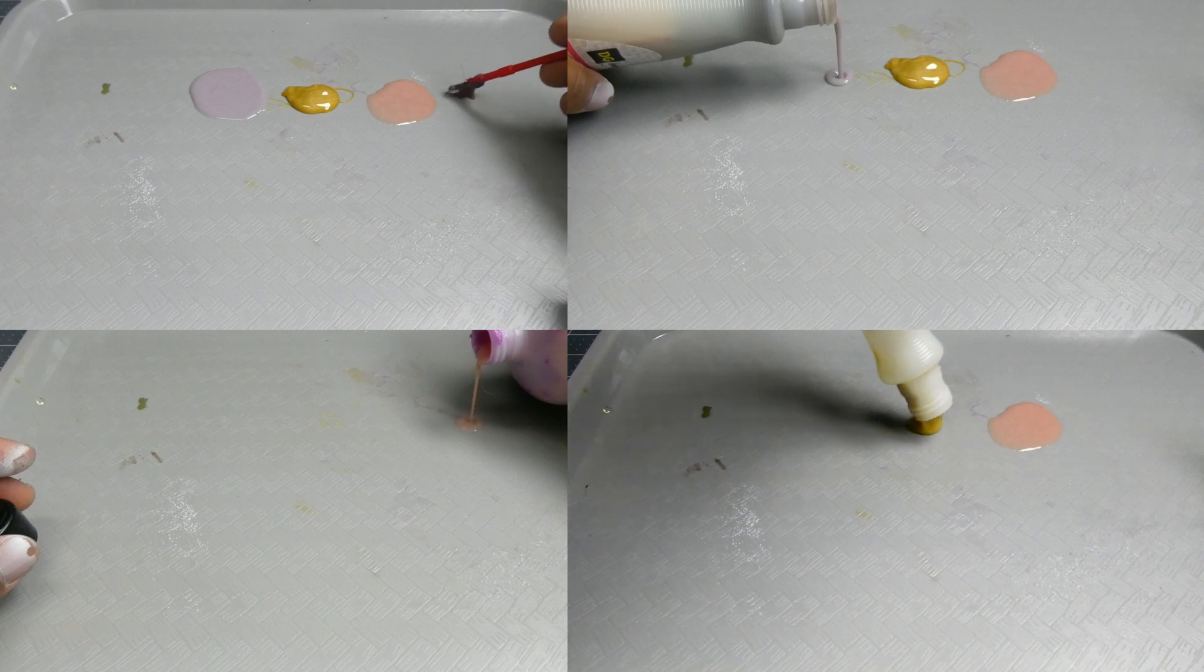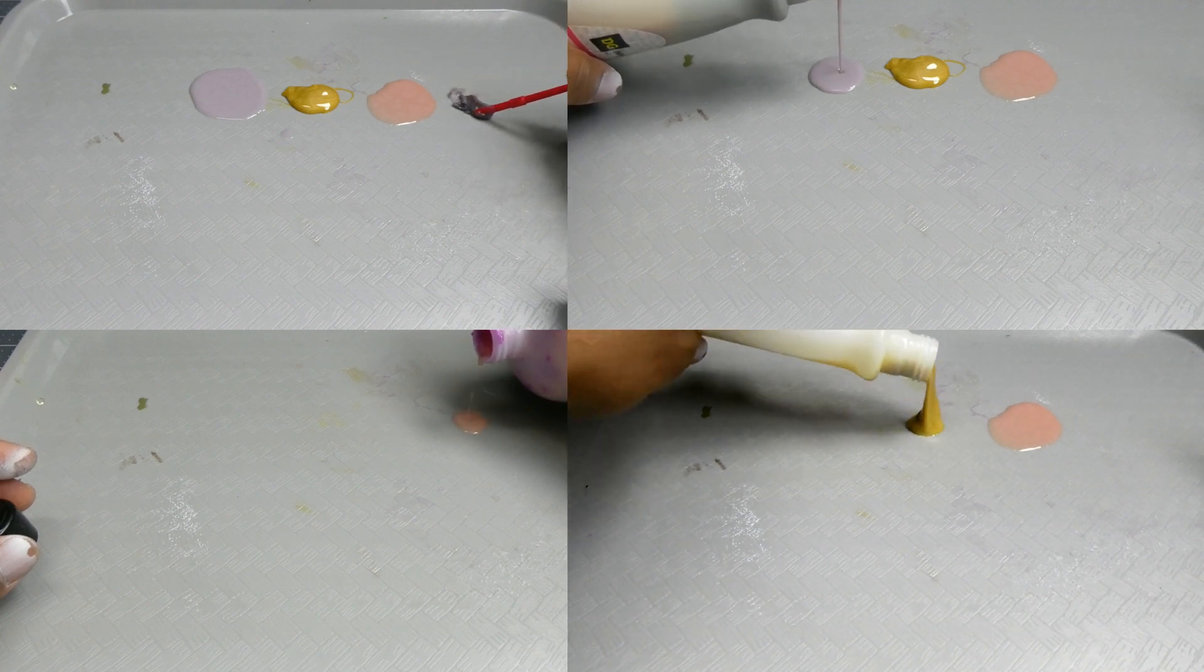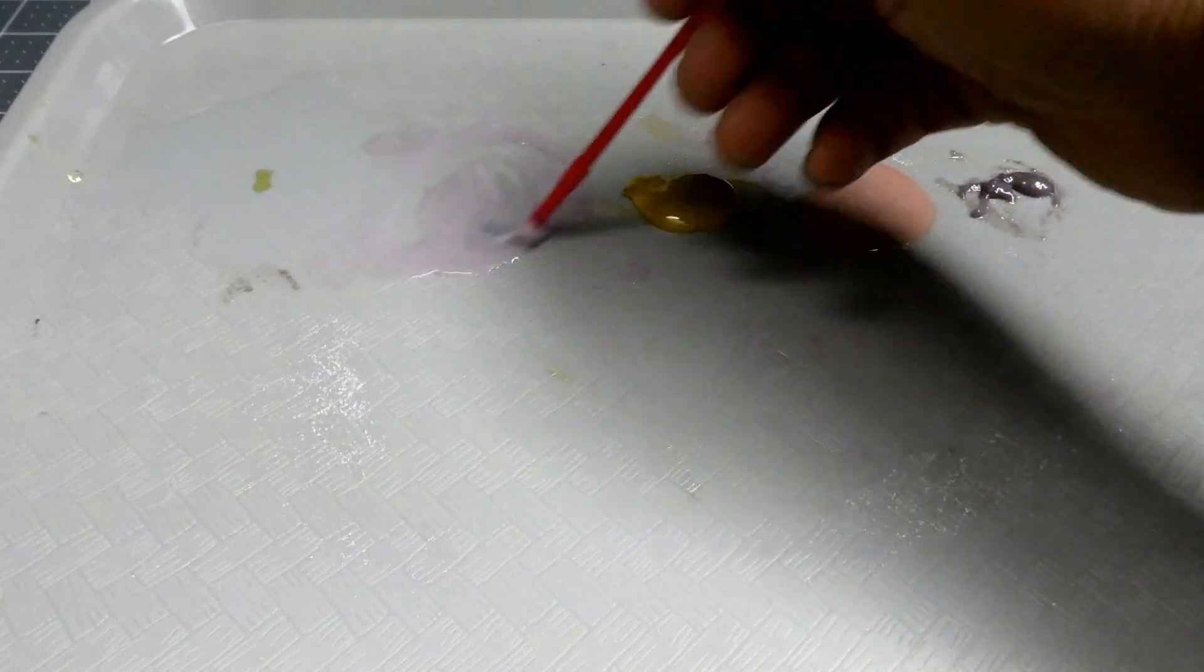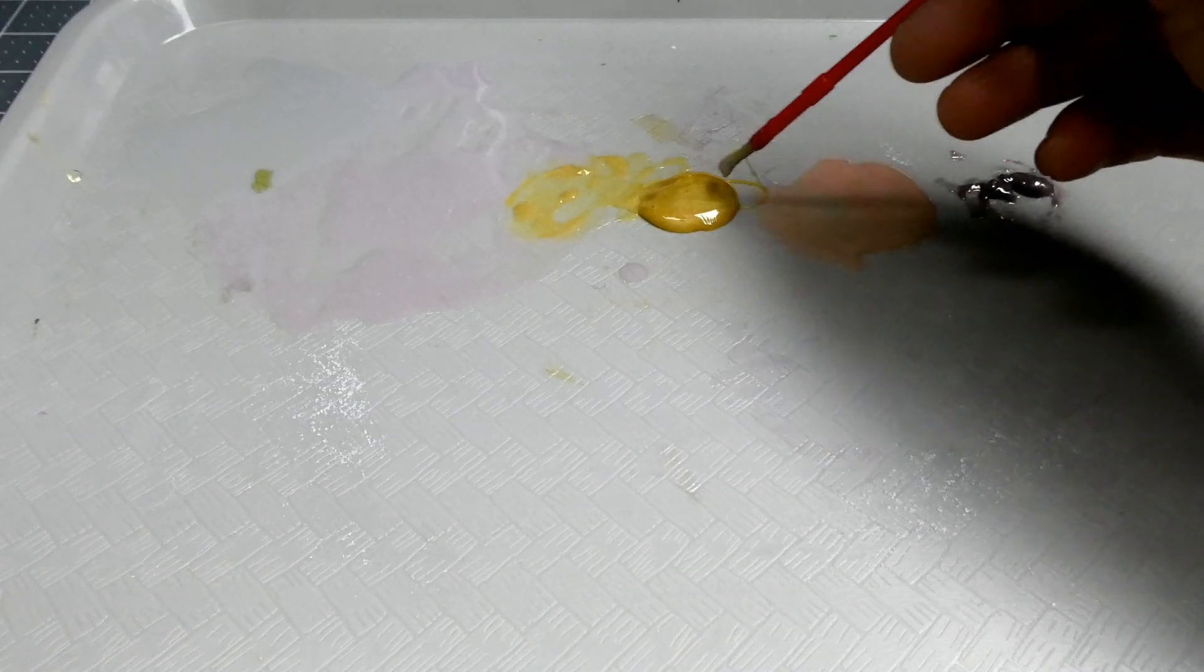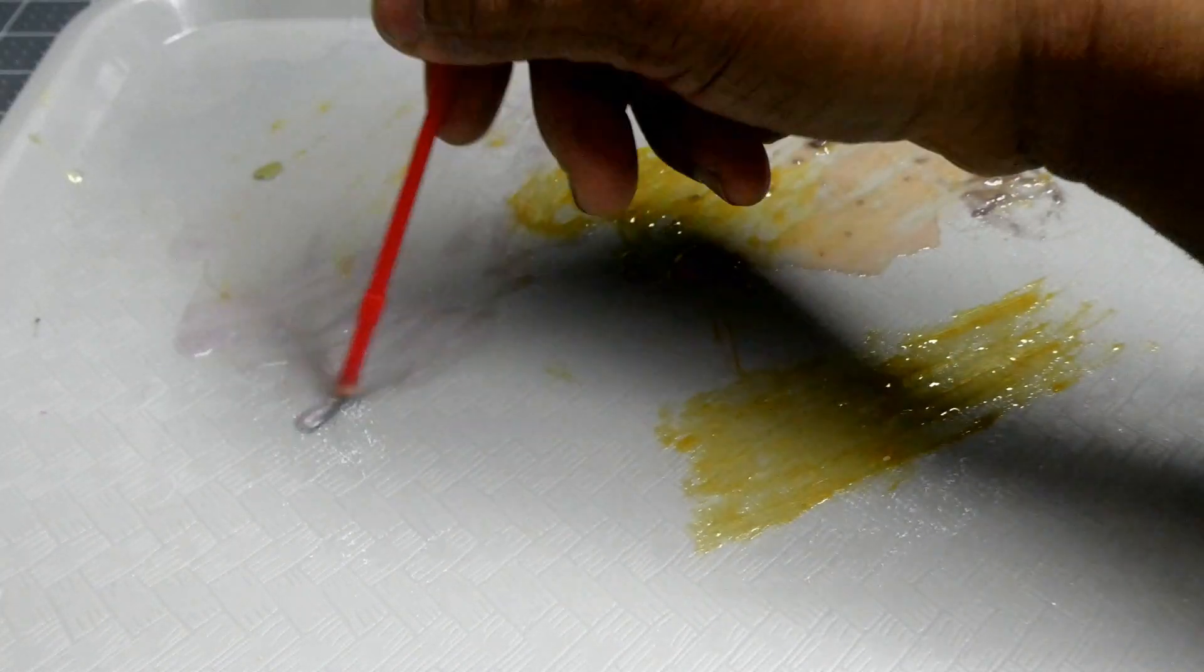And of course, the thicker you want it, the more plastic you have to add. So the more scraps and the more filament you have to add. And the stuff dries really fast, depending on thickness. The thinner it is, the slower it dries. The thicker it is, the faster it dries.